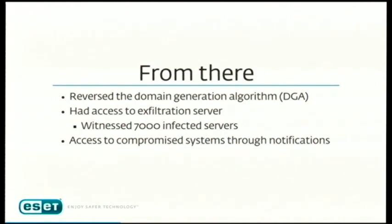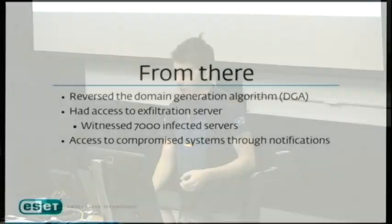When we recognized the pattern of correlating binaries across many servers, we reverse-engineered the domain generation algorithm and bought a domain to capture credentials sent via DNS. Immediately we witnessed 7,000 infected servers, and we knew we had to do something. When we started cleaning servers or telling administrators how to remove Cdork, many were getting reinfected — which led us to conclude this botnet spreads entirely through stolen credentials, not exploits. That's how it's been growing since the beginning.